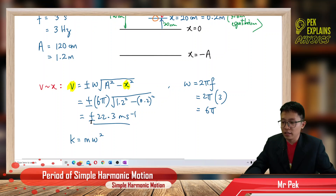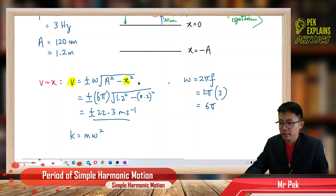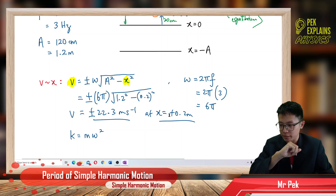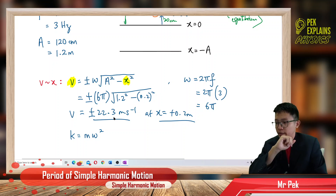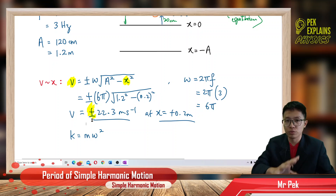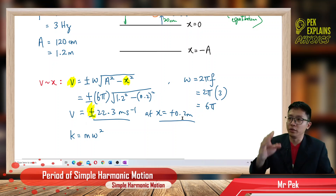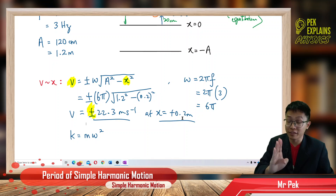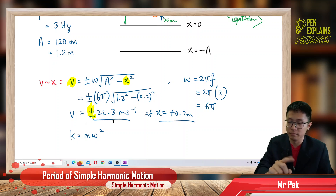The positive negative sign means at this position x = 0.2 m, the object has two possible directions. Maybe the object is going up — positive velocity — or going down — negative velocity. If given position only, we cannot determine for sure the actual direction. That's why we put the ± sign. Only if given a specific time can we determine one direction of velocity.